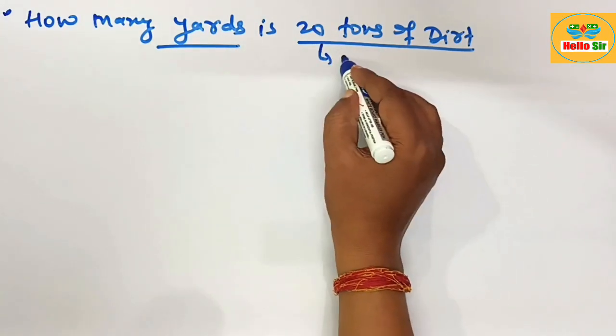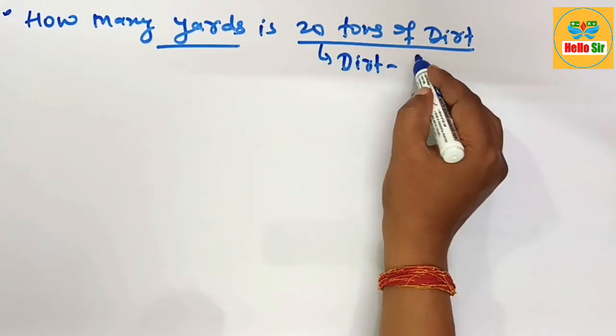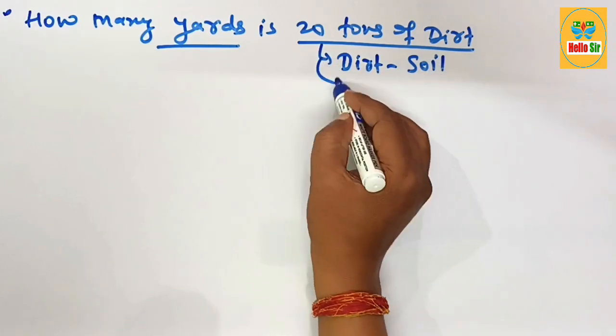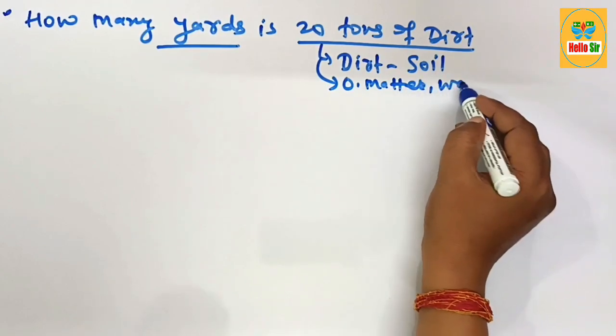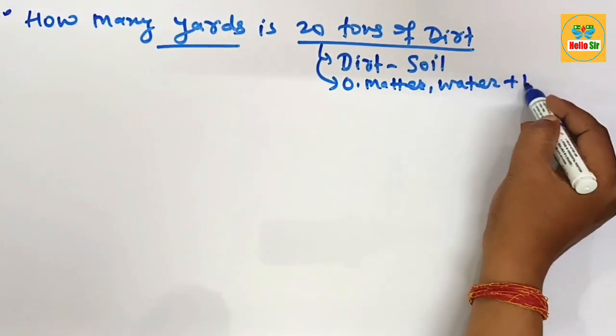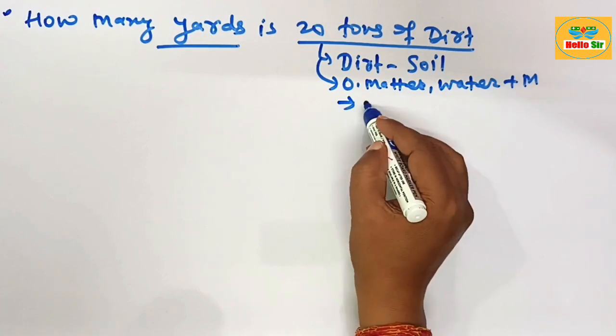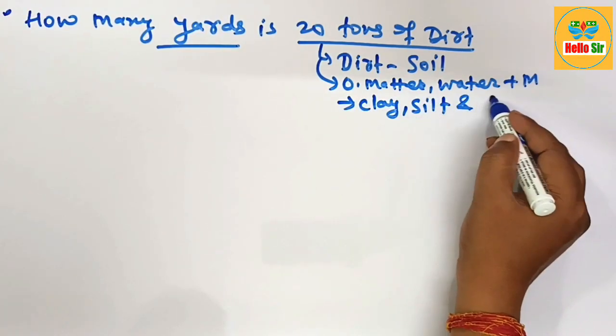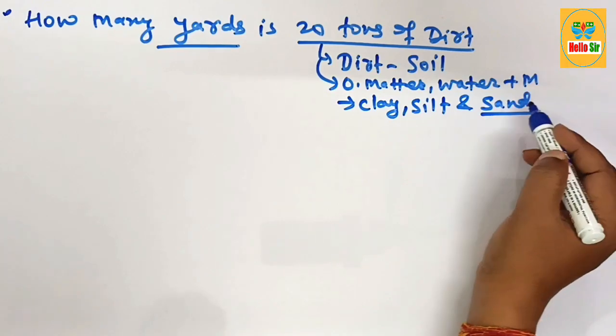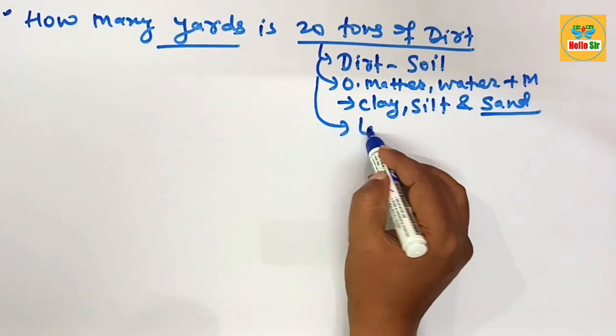You know that dirt is soil material composed of organic matter, water, and different types of minerals like clay, silt, and sand. This is used for landscaping projects.